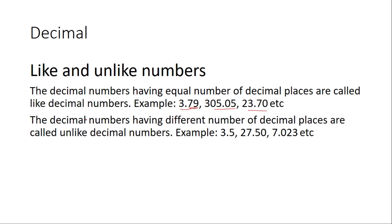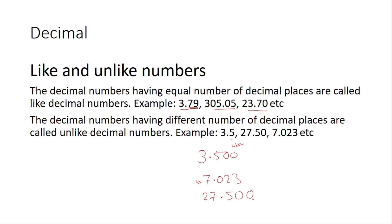Unlike decimal numbers: decimal numbers having a different number of decimal places. For example: 0.5 has one digit after the decimal, 0.50 has two digits, 0.023 has three digits. When solving questions, we have to convert unlike decimal numbers to like decimal numbers. We choose the largest number of decimal places — here, three digits — and add zeros to the others: add two zeros to make it three digits, add one zero to make it three digits. After that, we can add, subtract, or perform any operation.